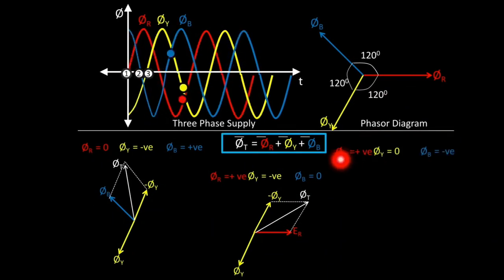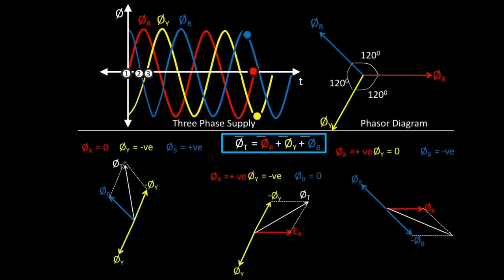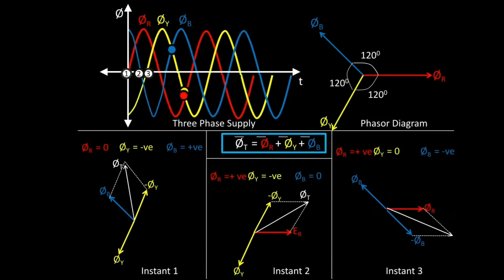We have to add +φR and −φB. Drawing the original phasor, since φY is 0 we remove its phasor. φB is negative, so we extend it in the exactly opposite direction to get −φB. Then we draw the parallelogram between φR and −φB, and joining the point of intersection from the origin gives us the resultant total flux φT. So we have done it for instant 1, instant 2, and instant 3.